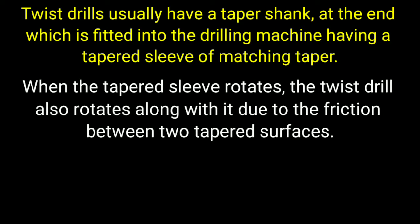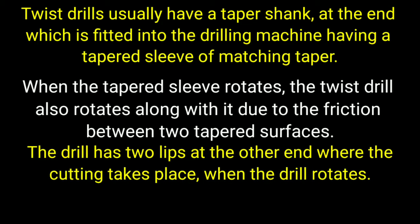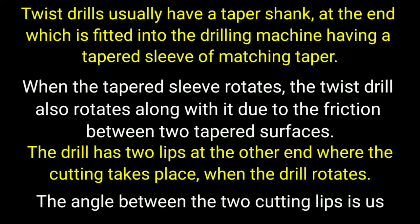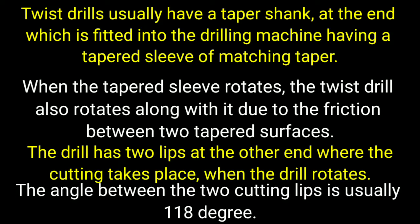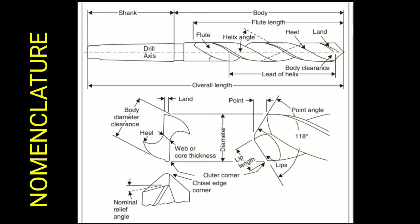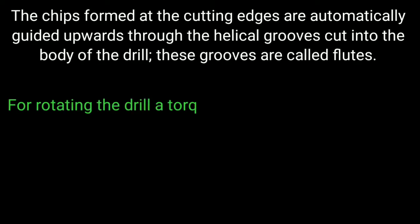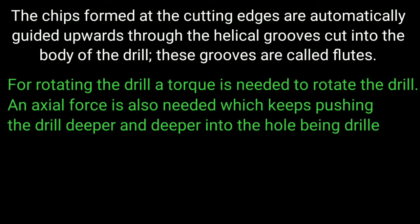When the tapered sleeve rotates, the twist drill also rotates along with it due to friction between the two tapered surfaces. Sometimes the shank is machined parallel; then a special collar called a chuck is fitted in the drilling machine in which the drill is held. The drill has two lips at the other end where the cutting takes place. The angle between the two cutting lips is usually 118 degrees. The chips formed at the cutting edges are automatically guided upwards through the helical grooves cut into the body of the drill. These grooves are called flutes.